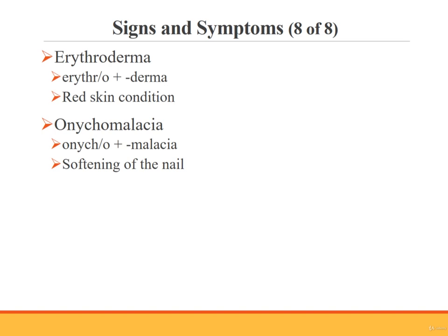Let's pause for just a minute to practice building terms for two of the signs and symptoms we just discussed. Consider the term erythroderma, which means condition of having red skin. The combining form erythro means red, and the suffix derma means skin. The combining vowel is retained because the suffix begins with a consonant. Now let's look at onychomalacia, which means softening of the nail. The combining form onycho means nail, and the suffix malacia means softening. Because the suffix begins with a consonant, the combining vowel O is kept before the word root and the suffix.